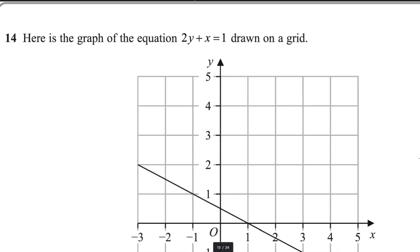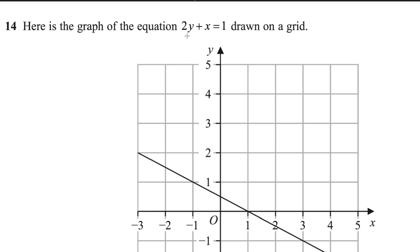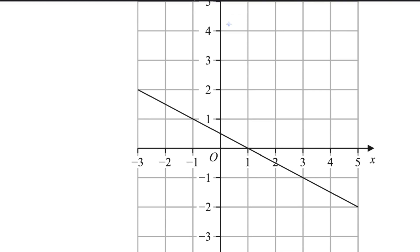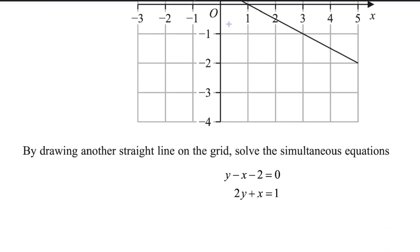Question number 14. A graph is given for the equation 2y plus x equals 1, and a line is drawn here. By drawing another straight line on the grid, we solve the simultaneous equations. We can rewrite the other equation — rearranging it gives us y equals x plus 2.